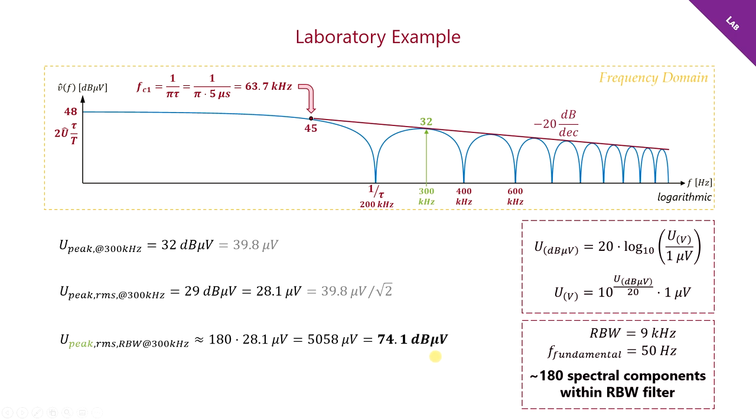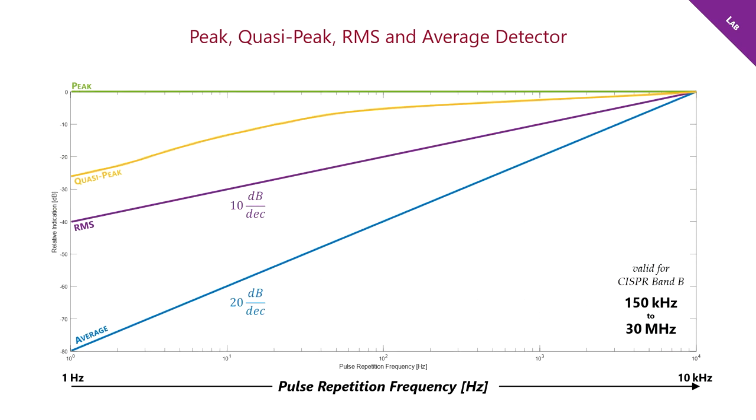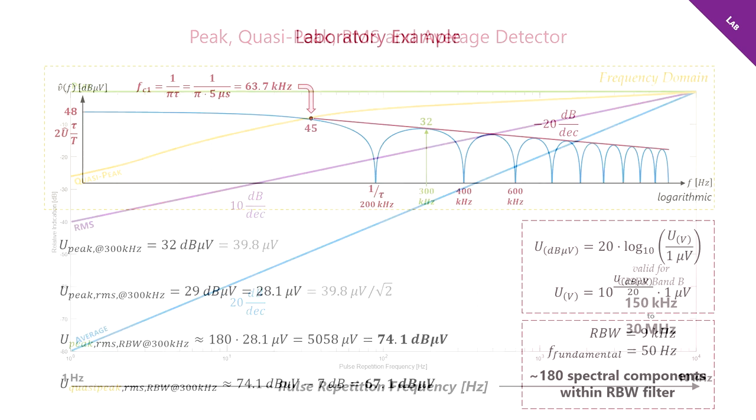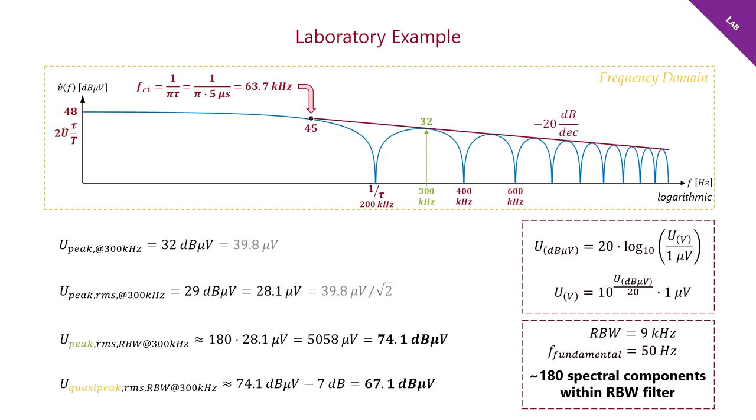Finally, let's talk about the expected quasi-peak value. To answer that, let's look back at this previous slide, and we will see at 50 Hz that we can expect a loss of about 7 dB of the quasi-peak detector compared to the peak detector. Therefore, we can expect to see about 67 dBµV with the quasi-peak detector. But once again, this is just a rough estimation.